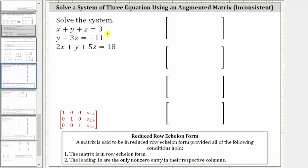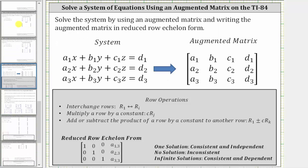Because we have a system of three equations with three unknowns, the augmented matrix will be a three by four augmented matrix, where the coefficients of x will be in column one, the coefficients of y will be in column two, the coefficients of z will be in column three, and the constants will be in column four.